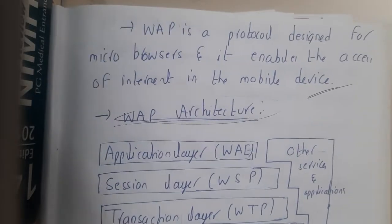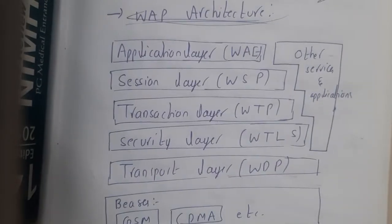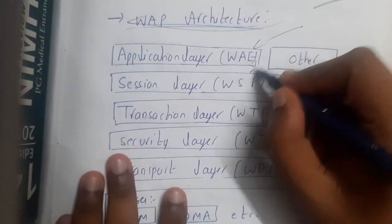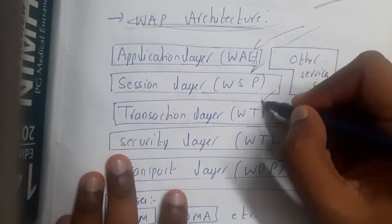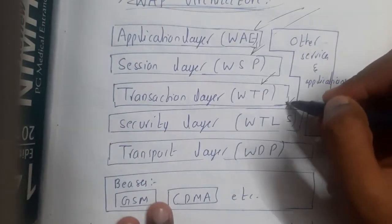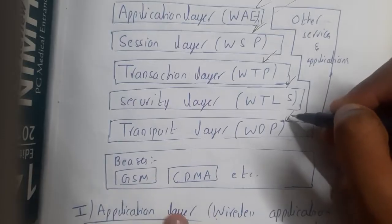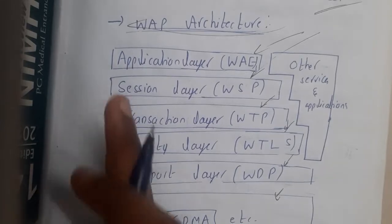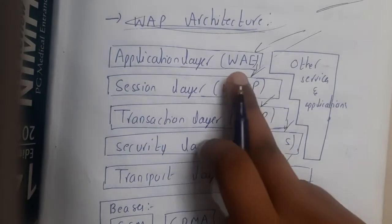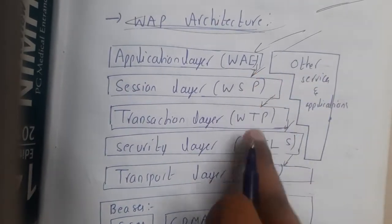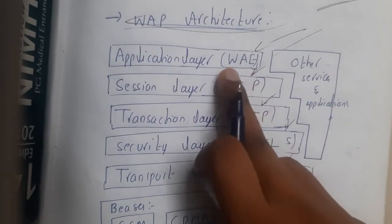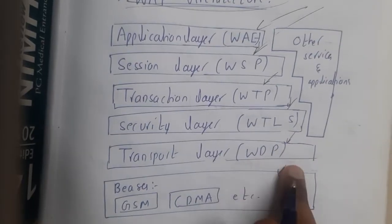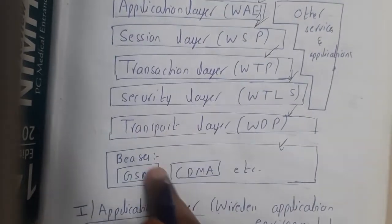The WAP architecture is quite simple. The first layer is the application layer, followed by the session layer, then the transaction layer, the security layer, the transport layer, and the bearer/base layer. Each layer corresponds to a specific protocol: WAE, WSP, WTP, WTLS, WDP, and the bearer services respectively.